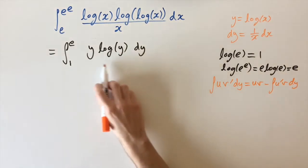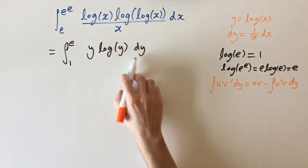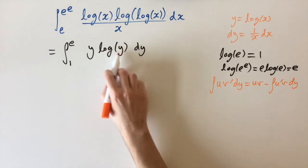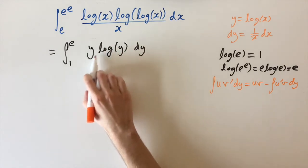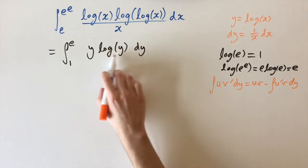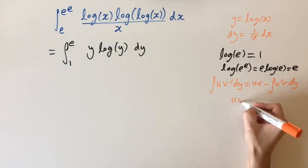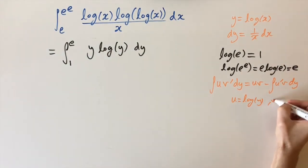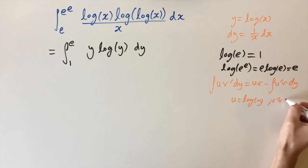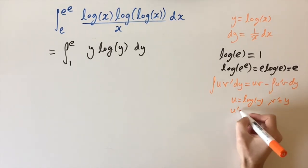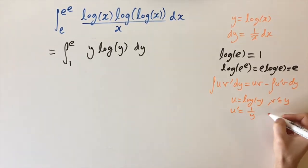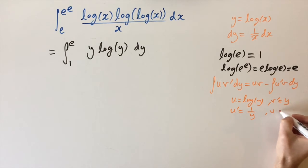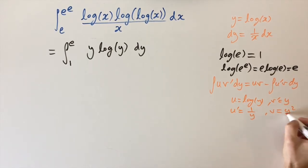We want to identify u and v. We can differentiate log y quite nicely, and we can integrate y. So we assign u equals log y and v' equals y. Then u' is 1 over y, and v is y squared over 2, just by integrating y.